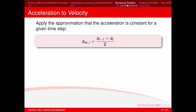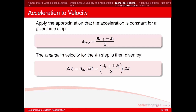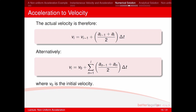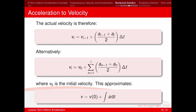We calculate the average acceleration for each time step as (a_i + a_{i−1}) / 2. The change in velocity for step i is then Δv_i = average acceleration × Δt. So the actual velocity is v_i = v_{i−1} + average acceleration × Δt. Alternatively, v_i = v_0 + Σ(average accelerations × Δt) from the start to the current step, approximating v = v_0 + ∫a dt.